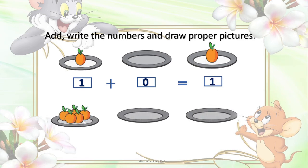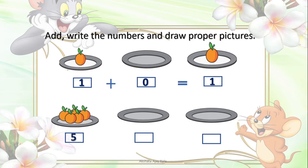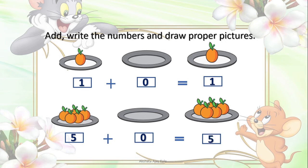Next, again we will draw the boxes first. Now here 1, 2, 3, 4 and 5 — five fruits are there, so let us write here 5. And here nothing is there, so 0. Now 5 plus 0 is equal to how much? Yes — 5. Very good. So let us write 5 in the box.